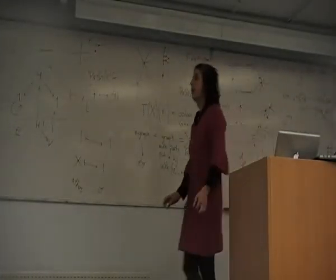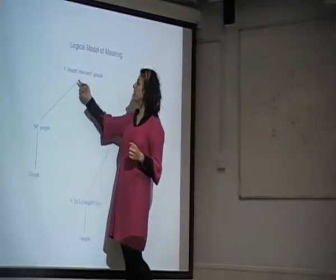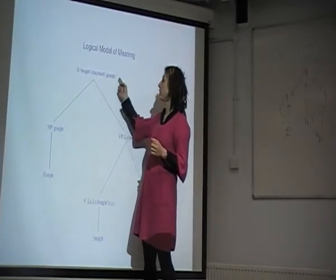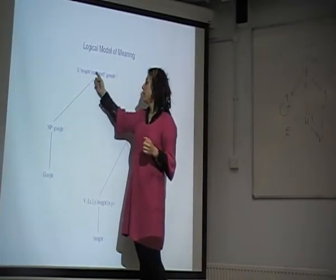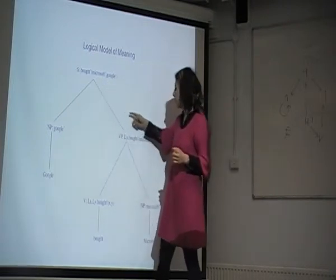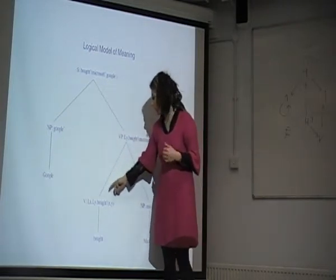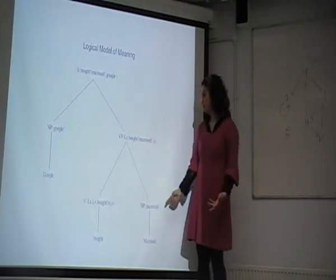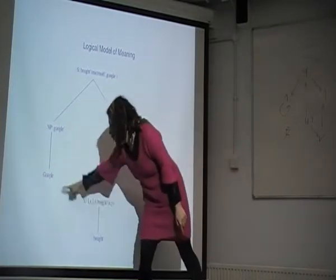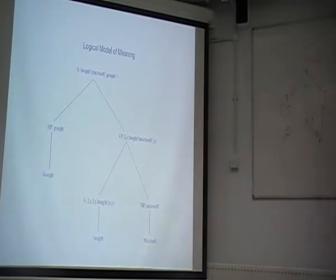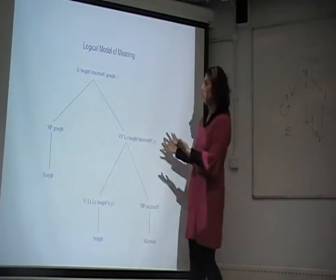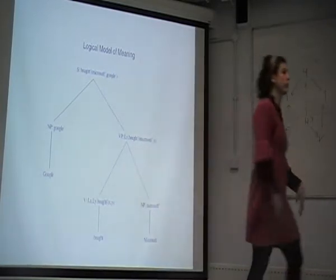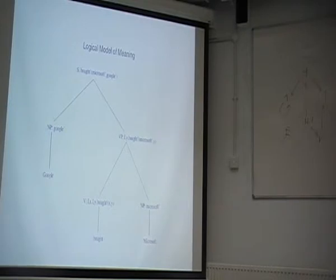Here is how the logical model of meaning works. The meaning of 'Google bought Microsoft' is a function that needs a noun phrase, Google, and a verb phrase, which itself needs a verb and a noun phrase. But it doesn't say anything about the meaning of Google. If somebody from Mars comes down to Earth, they'll learn the structure of the sentence but will never know what is Google.